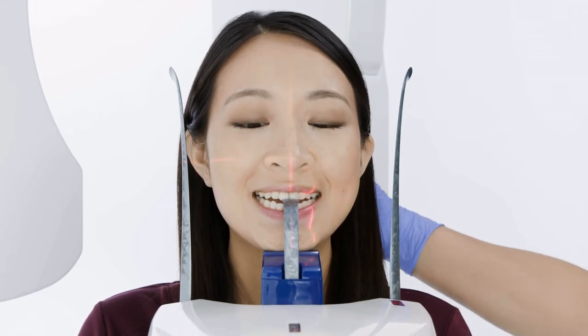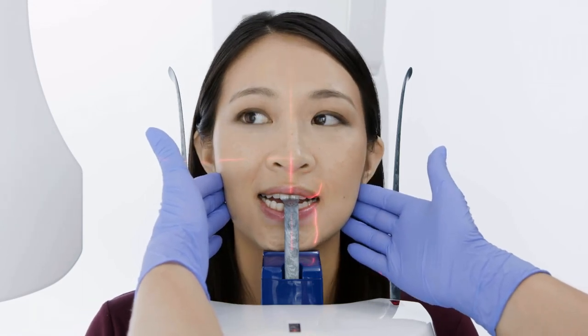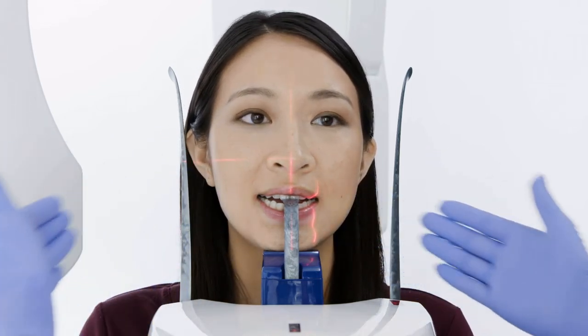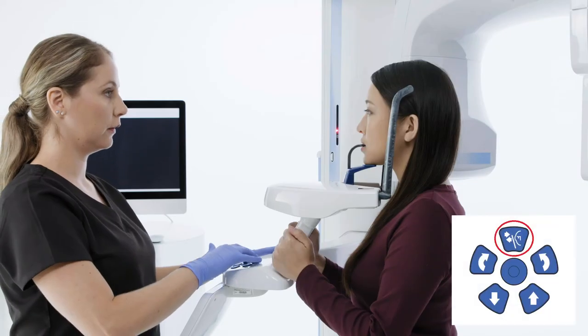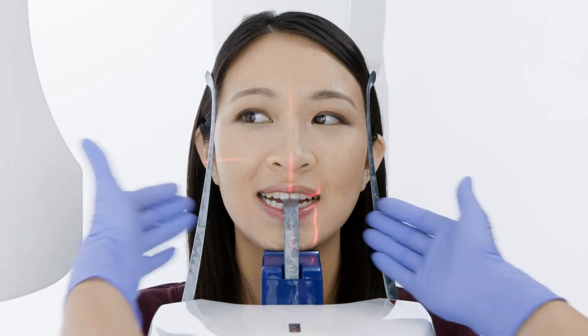Have the patient smile wide and raise or lower the unit until the posterior occlusal table is at a slight downward angle. Close temple supports. Align the mid-sagittal laser between the eyes by moving the head left or right.